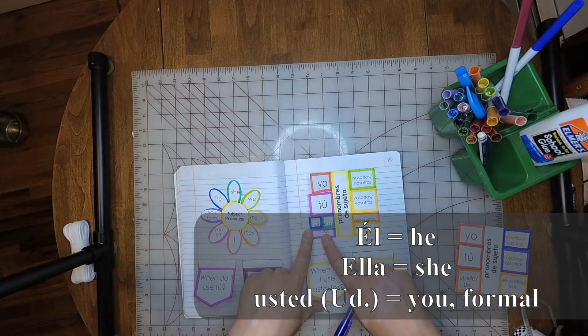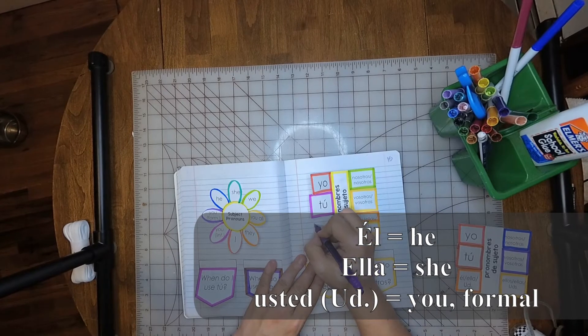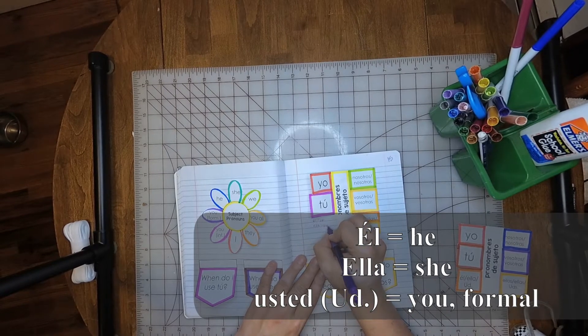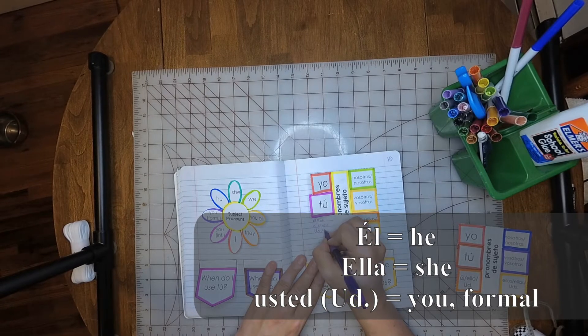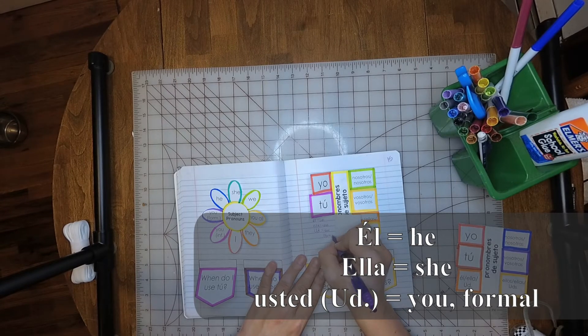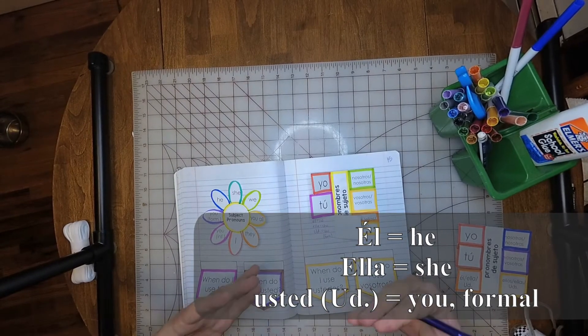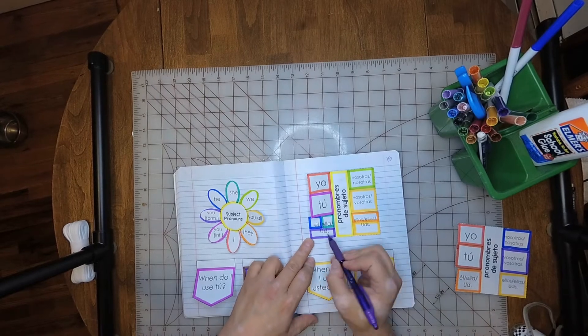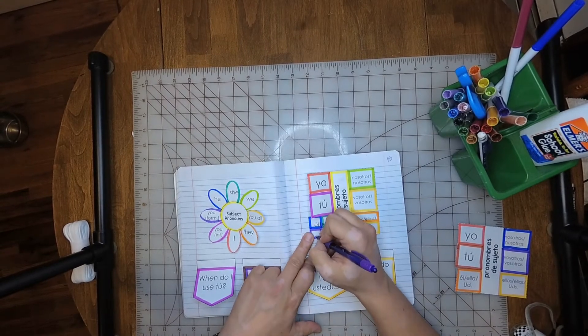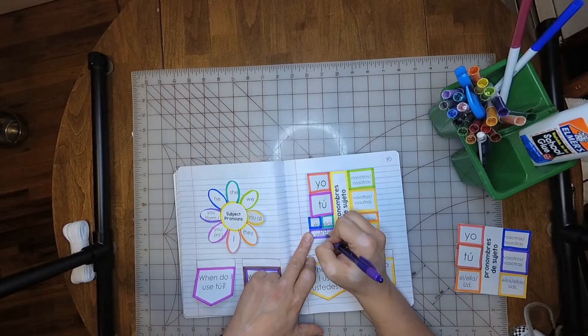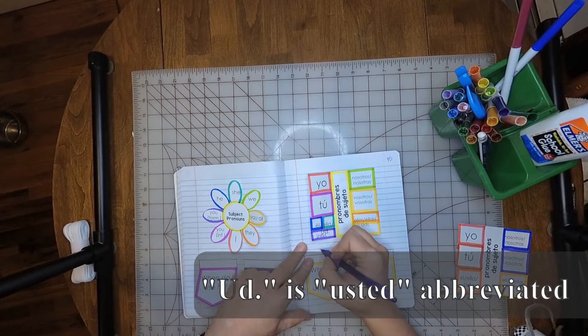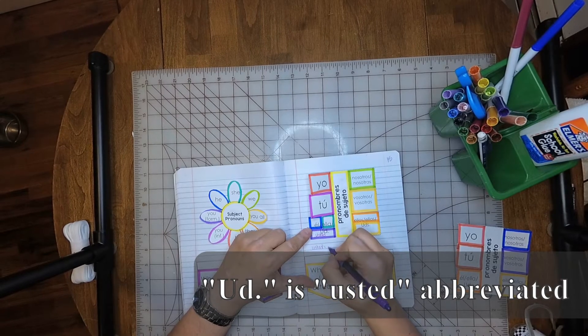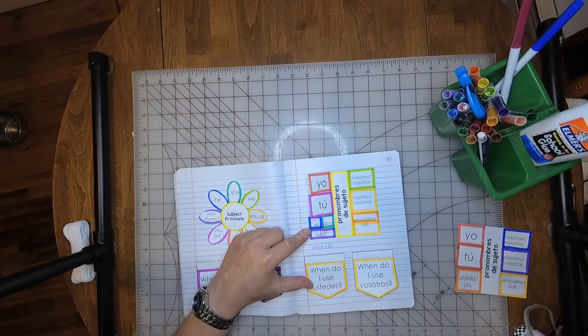Then under él, ella, and usted. You can write él is he, ella is she, and usted is you, and it's the formal you. So that you would use with your teachers, your boss, etc. Right underneath, you have two options. You can either put usted, write usted here on the flap. I'm going to do that, and I'm also going to write it below here. Usted is often abbreviated capital U, lowercase d, period in español.